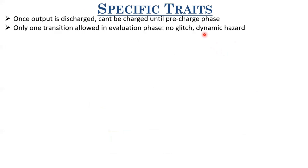There are specific advantages of dynamic design. Once the output is discharged, it cannot be charged again unless you go into the pre-charge phase. Therefore, only one transition is allowed in the evaluation phase — dynamic hazards and glitches are altogether removed. In the evaluation phase, you can only go once from logic level high to logic level low. If the inputs are such that the pull-down network is on, only then will the output discharge; otherwise it remains floating retaining its charge.